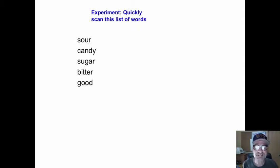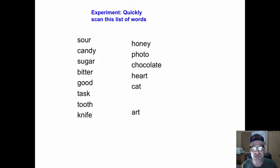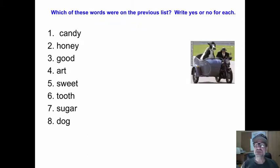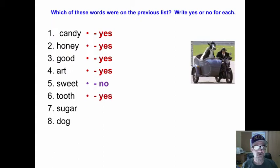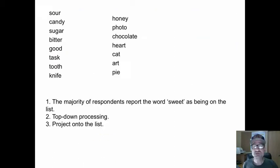Skim this quick list. Yes, this is an experiment looking at these words. There you go. Thought experiment. All right. Now which of these words were on the previous list? You can write yes or no. Yes, yes, yes, yes, no.